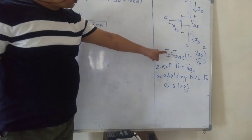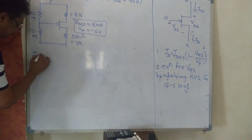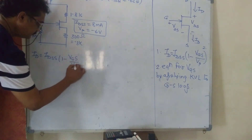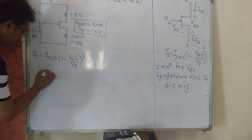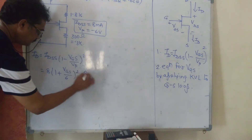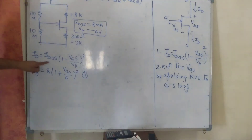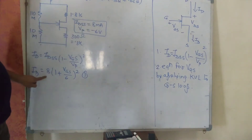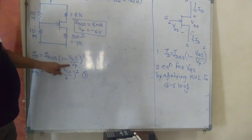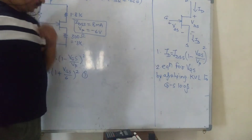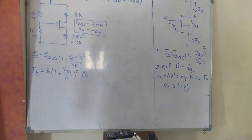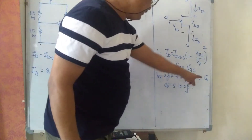For the given numerical you have to write equation 1. ID is equal to 8 milliampere, and Vp is equal to minus 6. So the equation becomes: ID = 8 × (1 + VGS/6)². Now for equation 2, we find VGS by applying KVL to the gate-source loop.